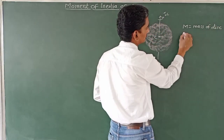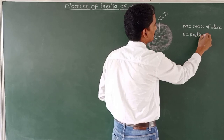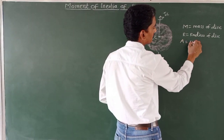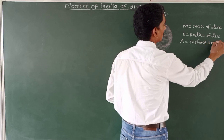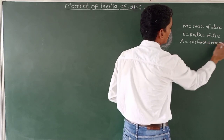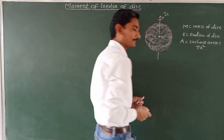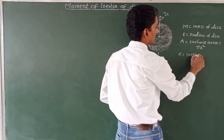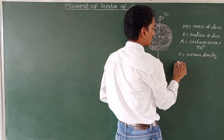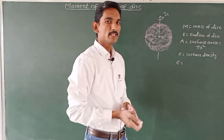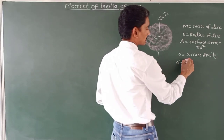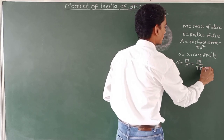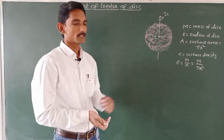Capital R is the radius of the disk. The surface area A of the disk is given by A = πR². The surface density σ is given by total mass upon surface area, so σ = M / πR².